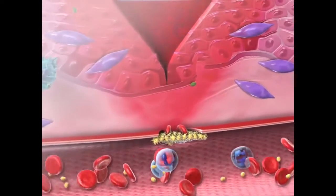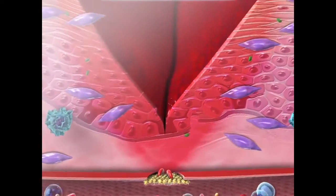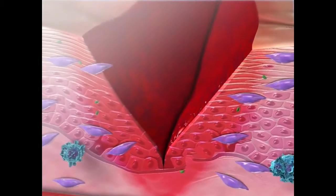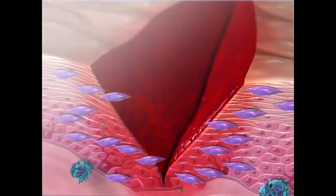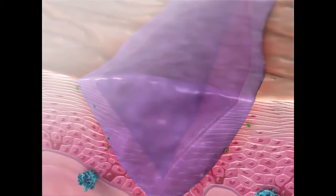As bacteria and dead cells are removed, the proliferative phase of wound healing begins. Fibroblasts build new tissue by secreting collagen that takes the shape of the original tissue.